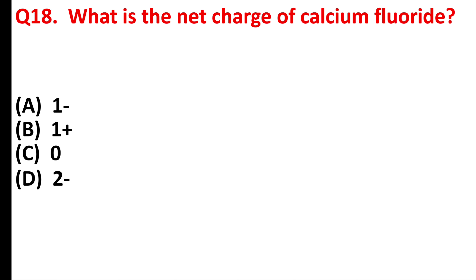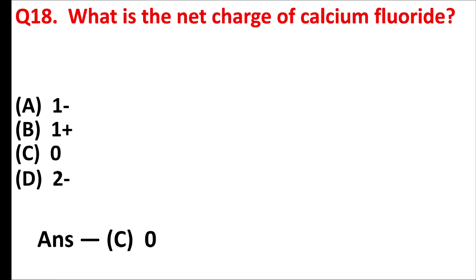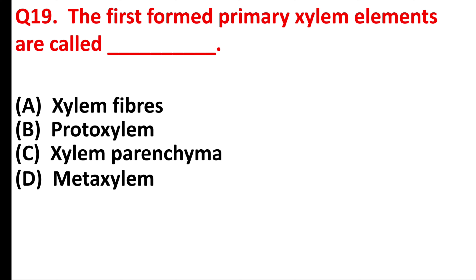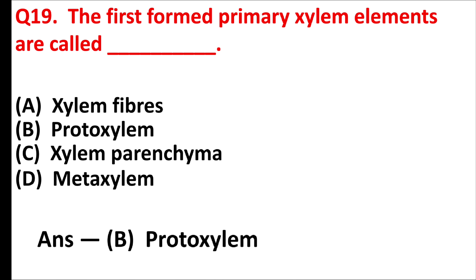What is the net charge of calcium fluoride? Answer is option C: zero. The first-formed primary xylem elements are called — answer is option B: protoxylem.